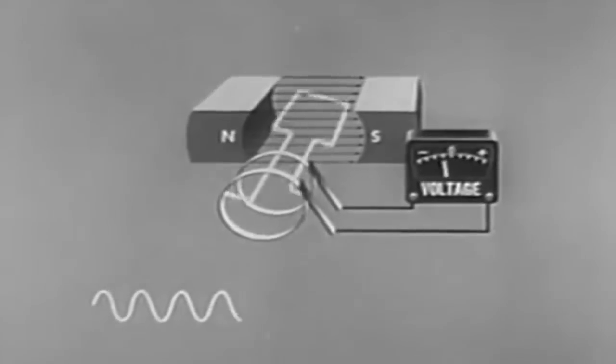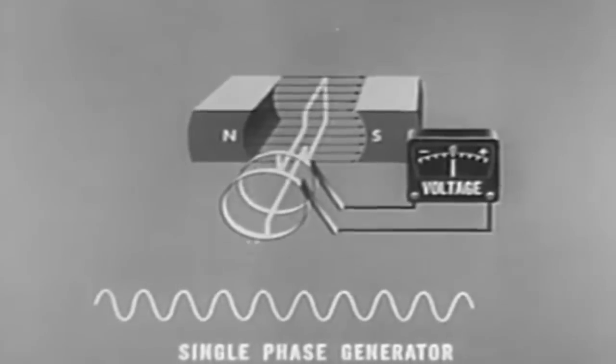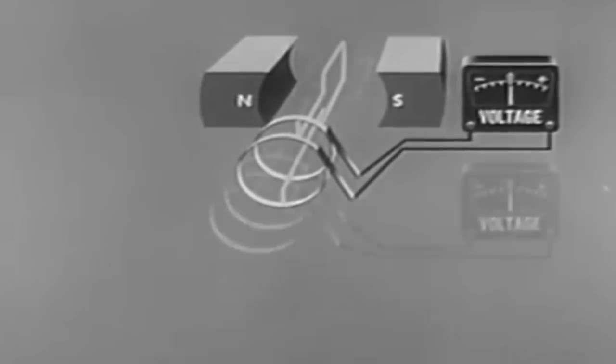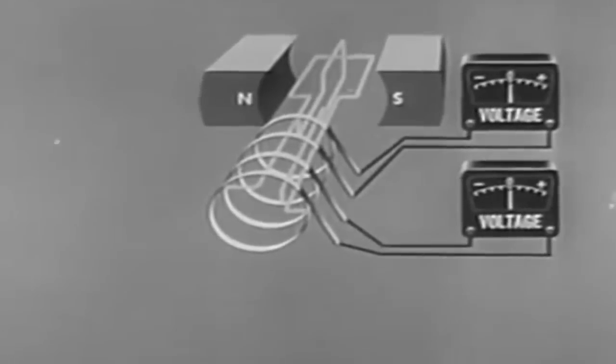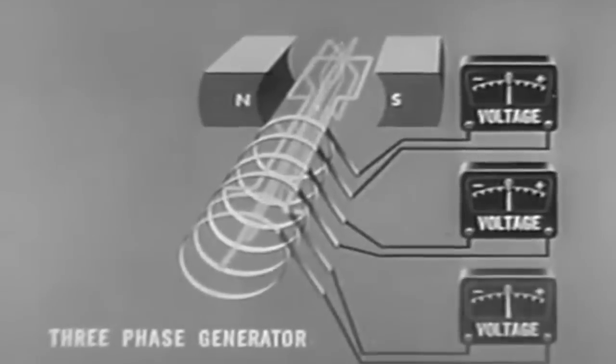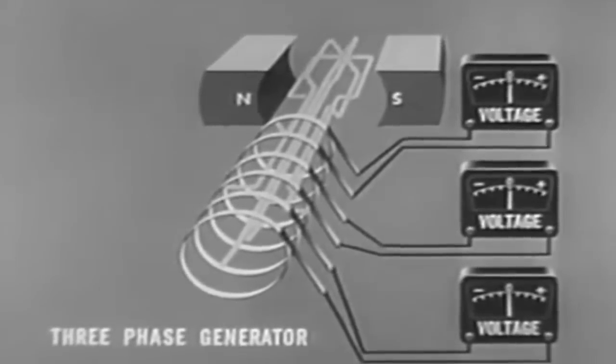The simplest AC generator shown here is the single-phase generator. This machine produces a single AC voltage. In the two-phase generator, we find two loops 90 degrees apart, and in the three-phase generator, three loops 120 degrees apart.